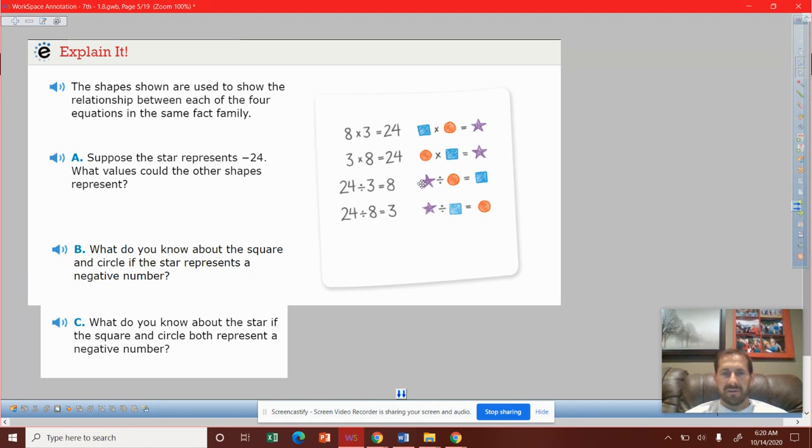Here, if we have some number divided by a negative, what does that mean? This would be negative. So the star would have to be positive. A positive star divided by a negative gets me a negative answer. Same thing - positive star divided by a negative gets a negative answer.